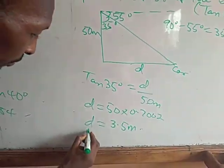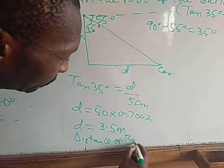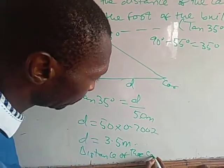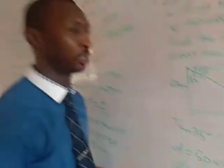So the distance of the car from the building is 35 meters. As you can see. Thank you all.